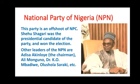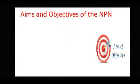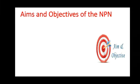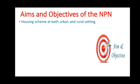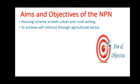What were the aims and objectives of the NPN as a political party? The aims and objectives of the NPN include: a housing scheme at urban and rural settings, to achieve self-reliance through the agricultural sector, and to promote respect for the Constitution.